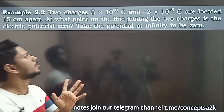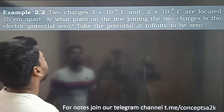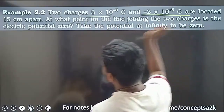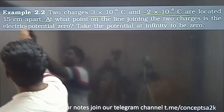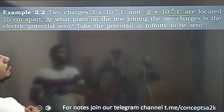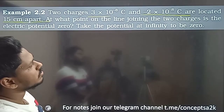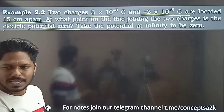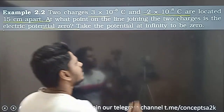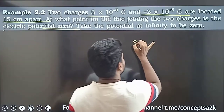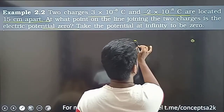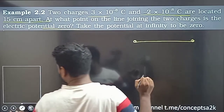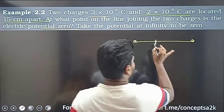Question number two: two charges are located 15 cm apart. At which point on the line joining the two charges is the electric potential zero? We have two charges — one charge here and another charge there. We need to find the point where the potential is zero.